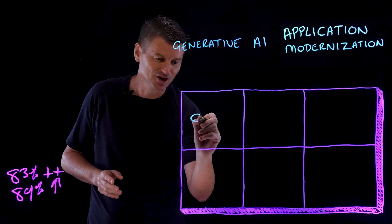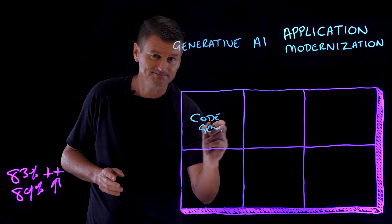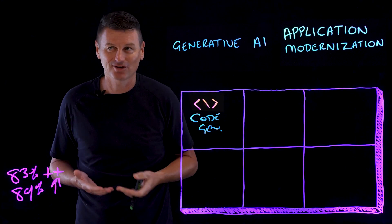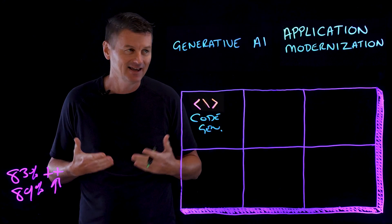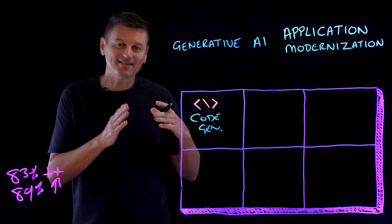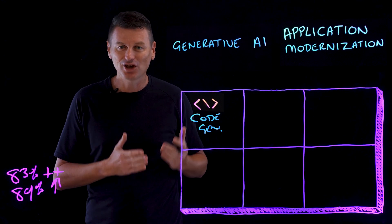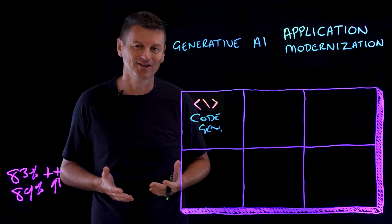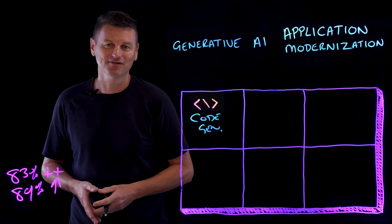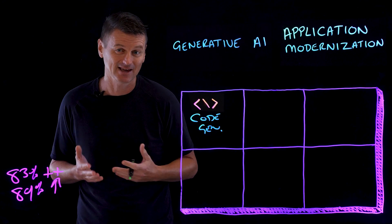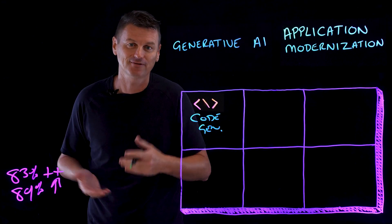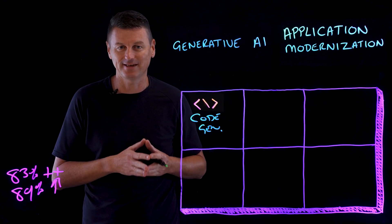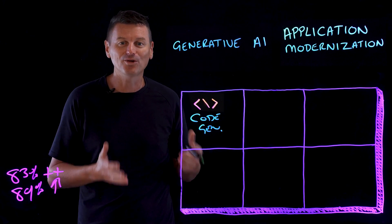And first up is code generation. Now, if you've ever found yourself spending hours coding basic modules or structures over and over again, it can get a tad monotonous. But by understanding the requirements or established patterns, generative AI can churn out code snippets or even entire modules. For example, let's say you're in charge of building a data processing system that involves connecting with a multitude of API endpoints